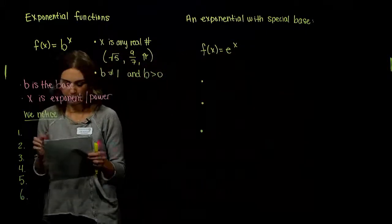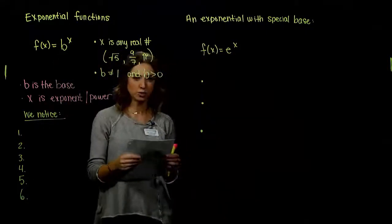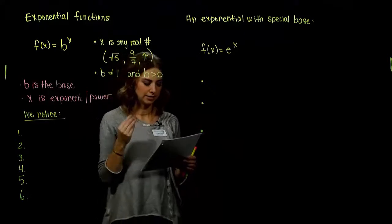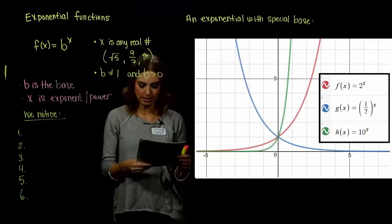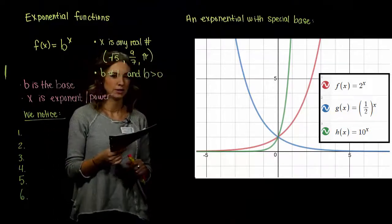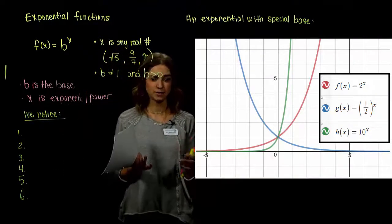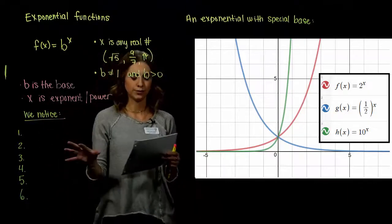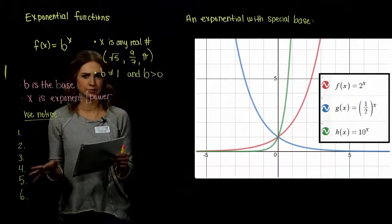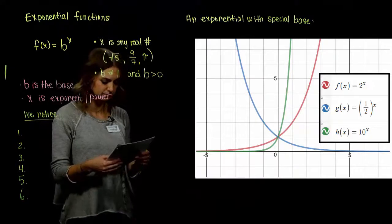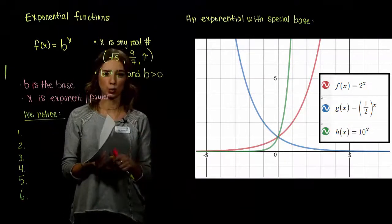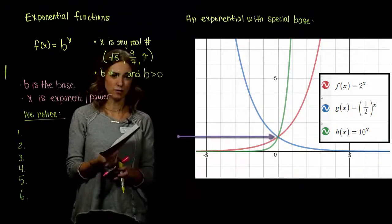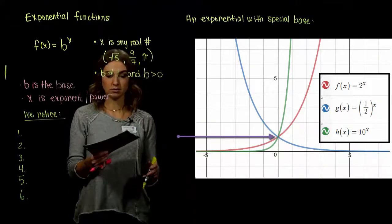We're going to look at graphs of three exponentials: 2 to the x, 1/2 raised to the x, and base 10 raised to the x. Looking at all three, they share similarities and some differences. One key observation: regardless of the base, every single one of them goes through the point (0, 1). Any base raised to the 0 power is always 1 — that's true regardless of the base.